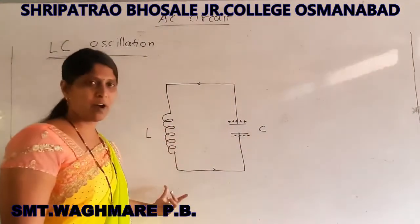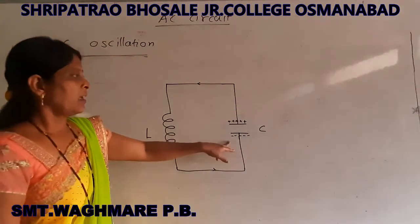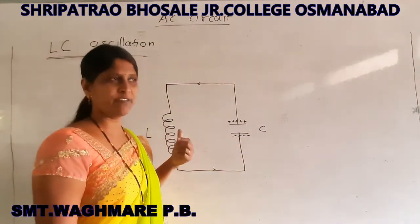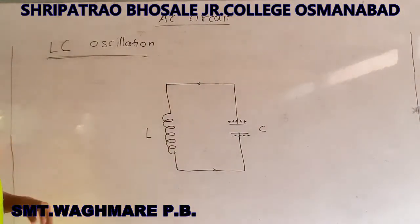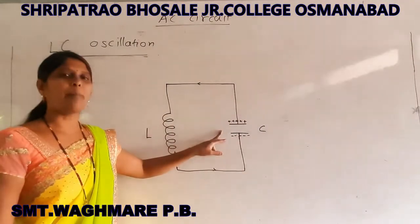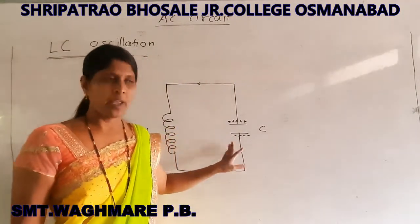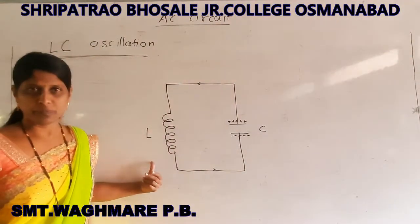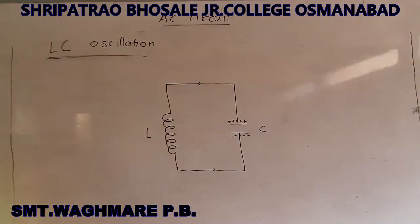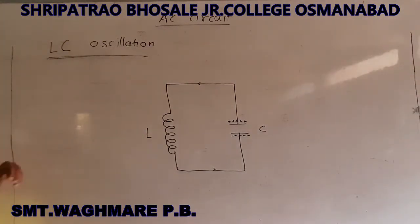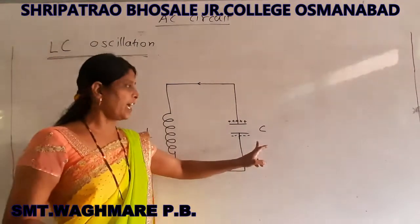The energy is stored in the form of a magnetic field. The energy stored in the capacitor is in the form of electrostatic energy. When the capacitor discharges completely, the energy in the capacitor will be zero and the energy in the inductor is at maximum. All the energy stored in the capacitor will be stored in the inductor, and as a result, the inductor will start to charge the capacitor again.